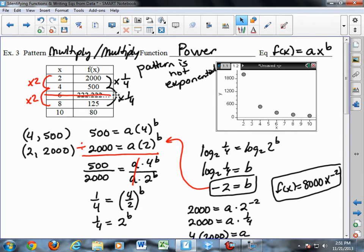If I continued the pattern, I'd do 125 divided by 4, and I'd get 31.25, and 8 times 2, and I'd get 16. So I'd be skipping over several of my values in the table. That is the power pattern.